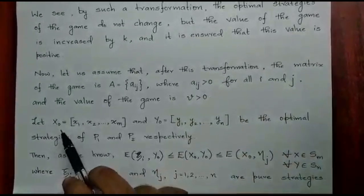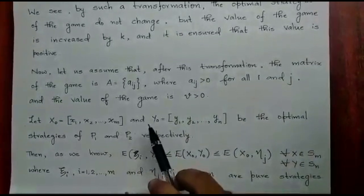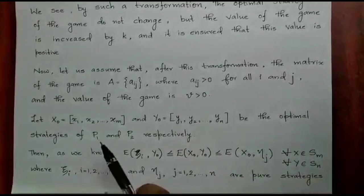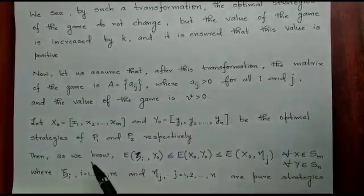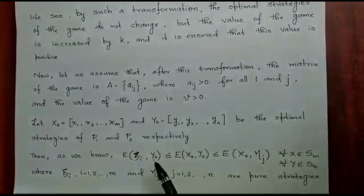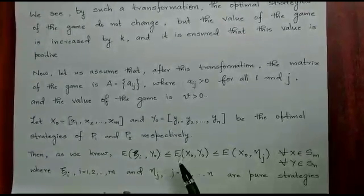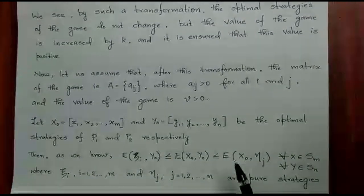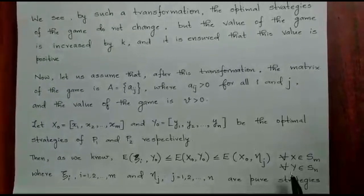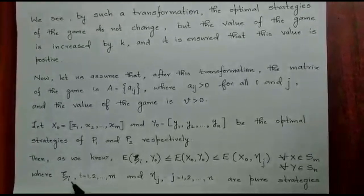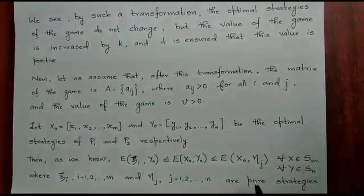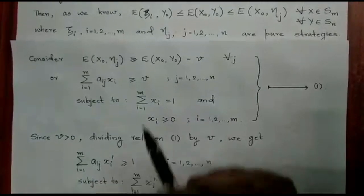Now let us assume that after this transformation, X0 equal to X1, X2, ..., XM and Y0 equal to Y1, Y2, ..., YN are the optimal strategies of P1 and P2 respectively. Then as we know, we have a result that expectation of Zeta I Y0 is always less than or equal to expectation of X0 Y0, which is less than or equal to expectation of X0 Eta J, for every X in SM and every Y in SN, where Zeta I varies from 1 to M and Eta J, J varying from 1 to N, are pure strategies.